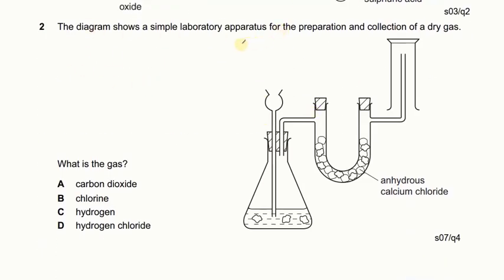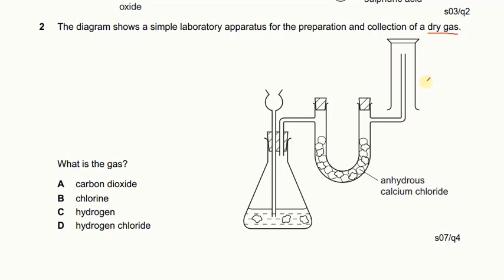In the next question we have a simple laboratory apparatus to collect a dry gas using a method suitable for lighter gases. From the list, carbon dioxide has a molecular mass of 44, chlorine is 71, hydrogen is 2, and HCl is 36.5. The lightest gas is hydrogen, which we can collect with this method. So C is the right answer.